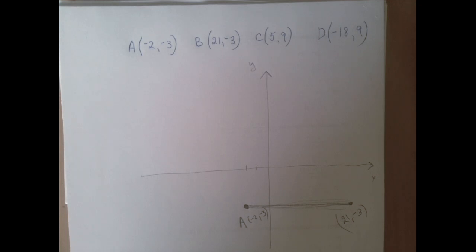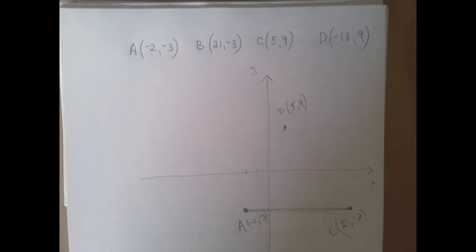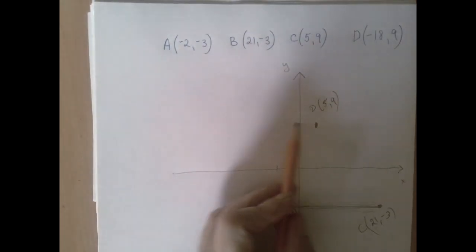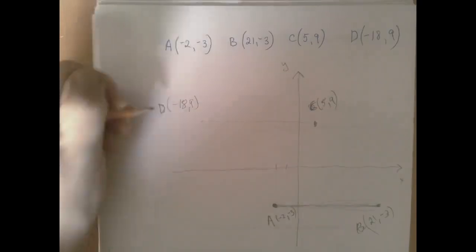Okay, so the next one is C, 5, 9, and then D is negative 18, 9. So again, the y-coordinates are the same.